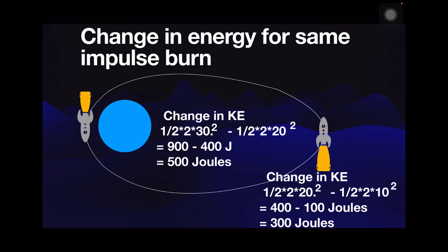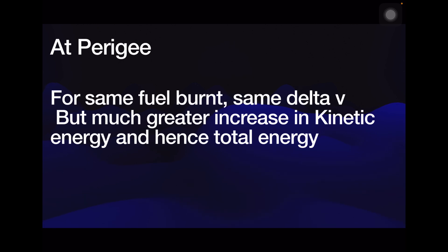So at perigee, the impulse burn of the same delta v, the same amount of fuel, provides a far greater increase in kinetic energy, hence total energy. And that's the point.